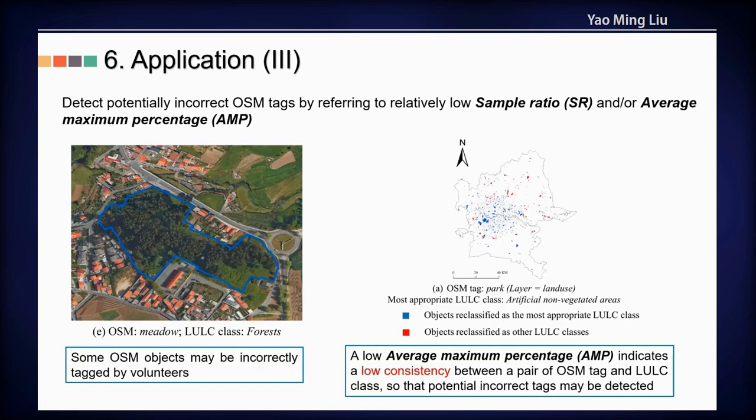The third application is OSM quality assessment. For example, a low average maximum percentage indicates low consistency between an OSM tag and a reference class, and we can detect potential incorrect tags within that OSM tag.